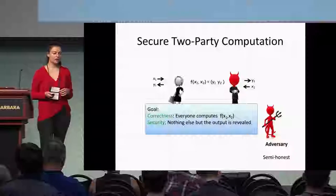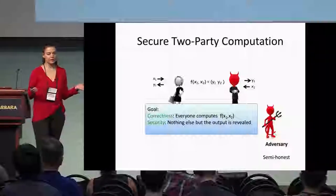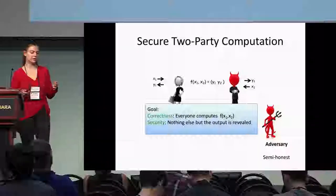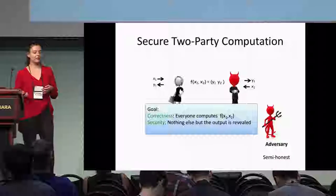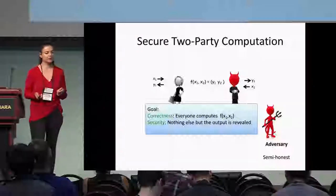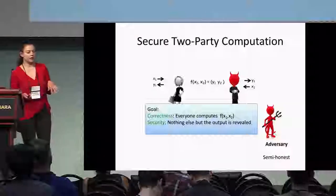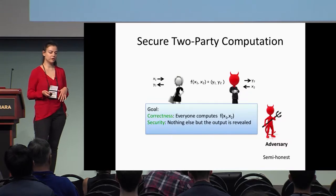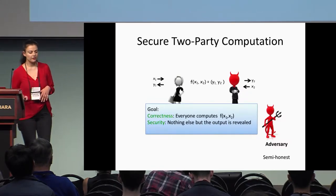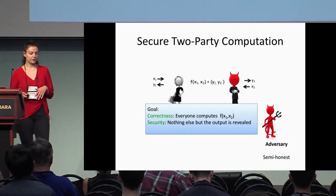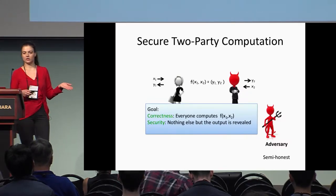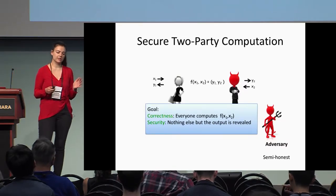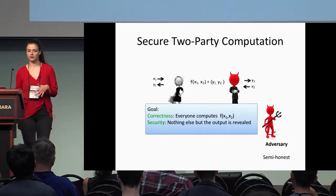Secure two-party computation allows a set of two parties to compute a joint function on the inputs such that the honest party receives the correct output and the output is the only new information leaked. We want this to hold in the presence of an adversary, and in our work, for simplicity, the adversary is going to be semi-honest, and our negative result will translate to the malicious setting.